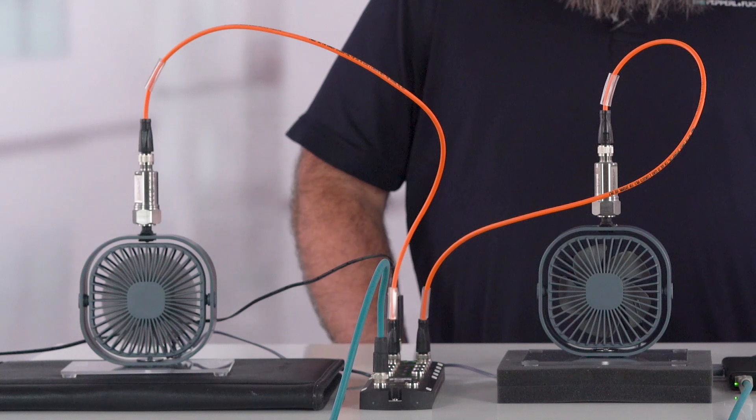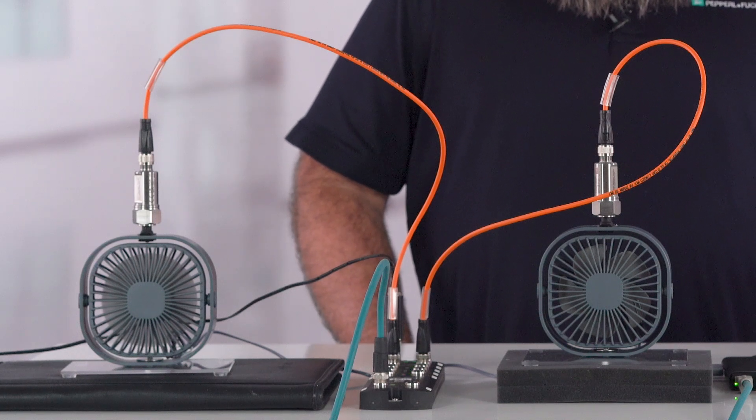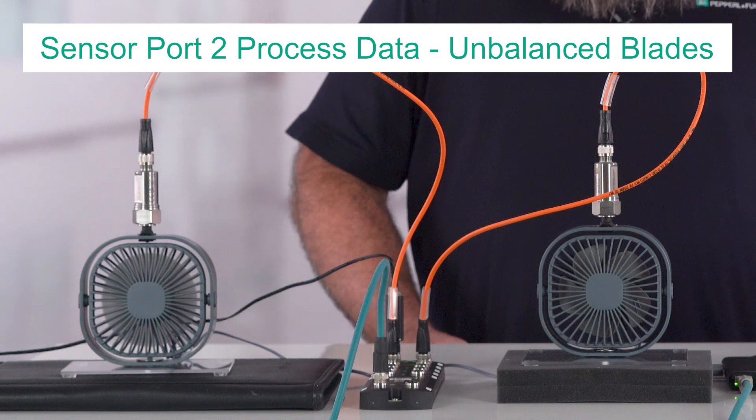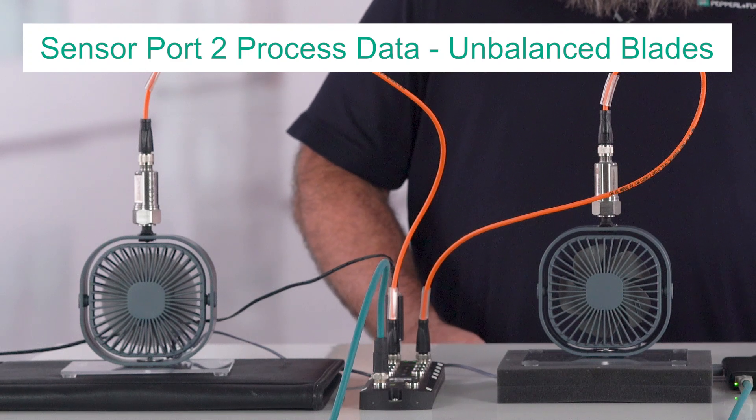The fan on the right is not running because I modified one of the fan blades by adding a small paper clip. This fan is represented by the bottom line labeled Sensor Port 2 for unbalanced blades.